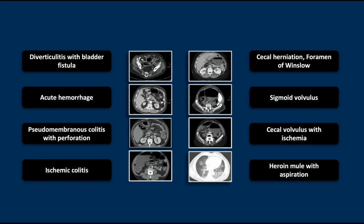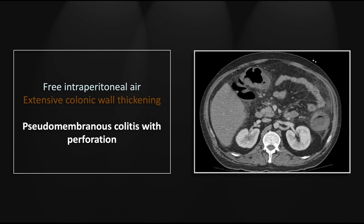Our next case is pseudomembranous colitis with an associated perforation. The perforations in these cases can be extremely subtle. That colonic wall gets markedly thickened and inflamed and loses all of its integrity, but it doesn't always frankly rupture. Often it's just a tiny leak that results in these small intraperitoneal foci of gas. There is extensive wall thickening throughout the entire colon, and it is that extensive involvement that specifically suggests pseudomembranous colitis as the cause.